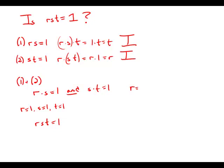I could also pick r equals 3, and then s would have to be 1 third, so that r times s equals 1. And then in order for s times t to equal 1, t would have to be 3. But then if I multiply r times s times t, 3 times 1 third times 3, I get 3. And so this is not equal to 1.